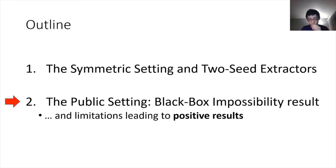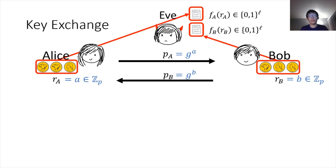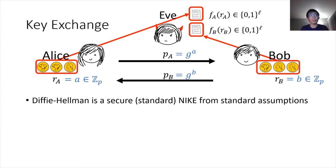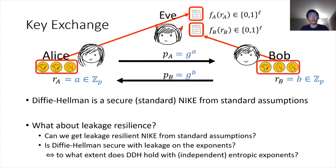Now let me switch gears and turn to the public key setting. The basic setting is where Alice and Bob share some randomness — each has independent randomness and exponents. Eve gets some leakage over those random coins. For concreteness you can think of this NIKE as the Diffie-Hellman key exchange. The basic question is: what can we hope for in terms of leakage resilience for NIKEs, and can we even get any construction whatsoever? Or, more optimistically, can the Diffie-Hellman key exchange be directly leakage-resilient?